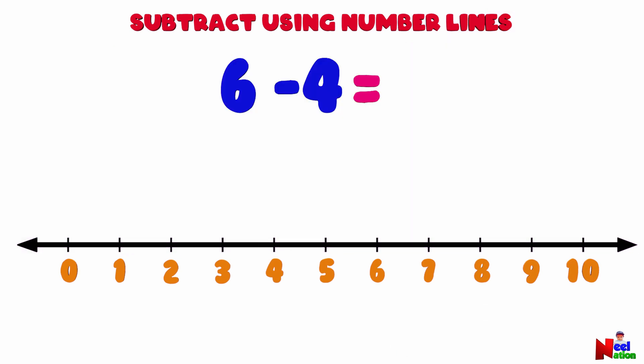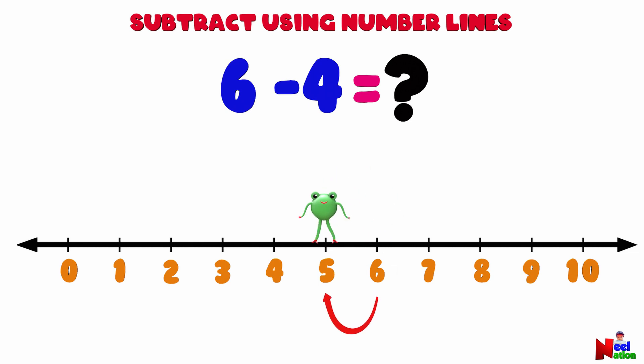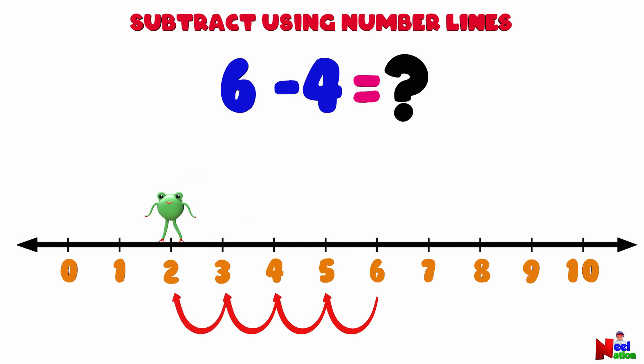What is 6 minus 4? Find the number 6 on the number line. Now, to take 4 away, starting from number 6, Mr. Lutu will jump four points backwards to the left. 1, 2, 3, 4. Where has he landed? Number 2! He has landed on the number 2. So 6 minus 4 equals 2. Yay!